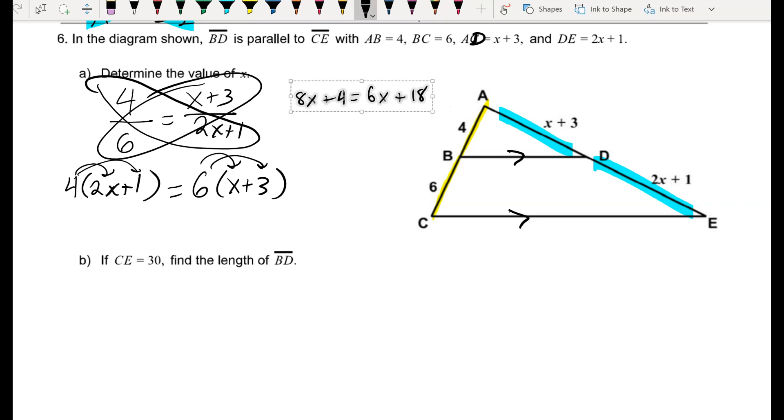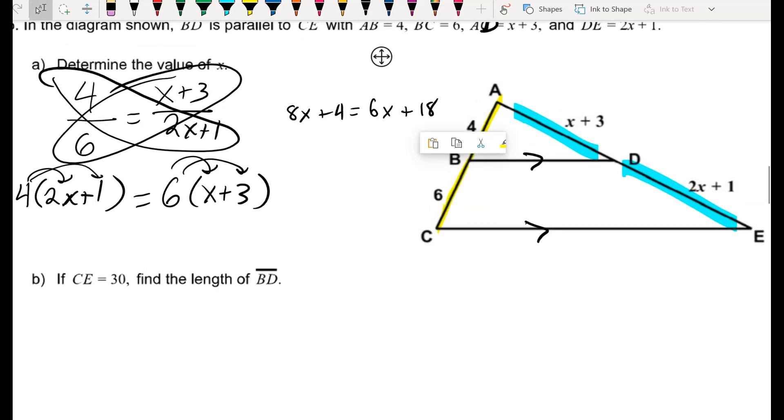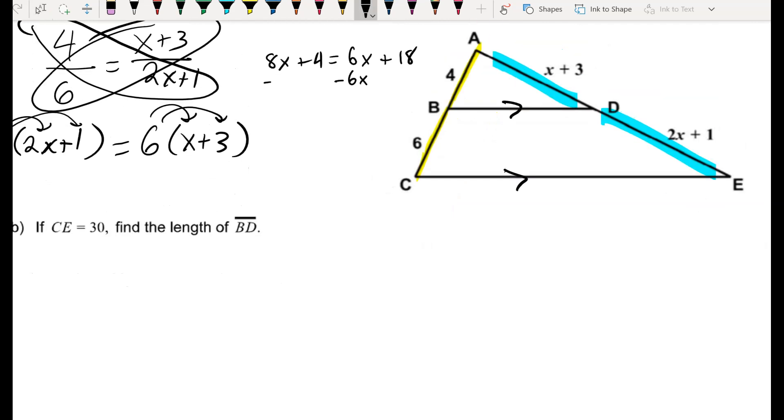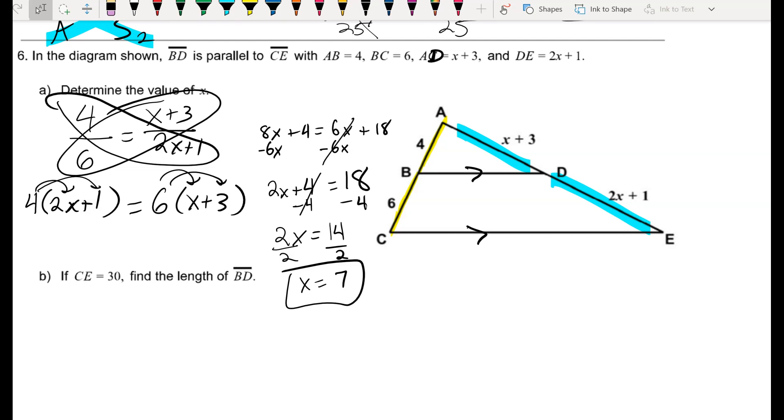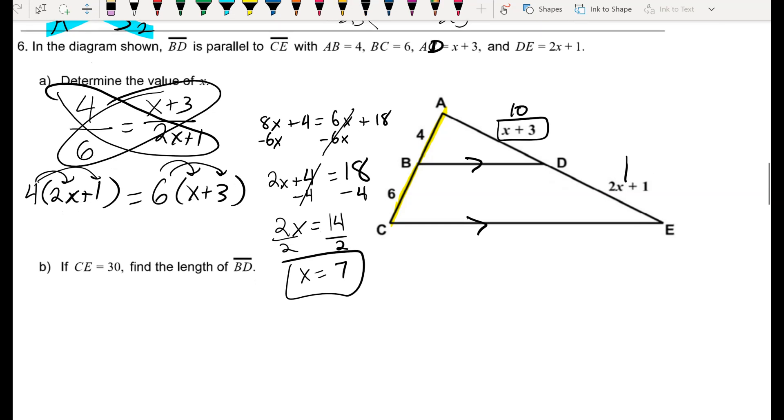I'll start by subtracting 6x on both sides to collect all my x terms together. 8x minus 6x is 2x. So if I subtract my constant, I can see that 2x is equal to 14. And if I divide out the two, I see that x is equal to 7. So I'm going to substitute back in. Rather than AD being x plus 3, I'll label AD as 10, just 7 plus 3. And if I make a quick substitution, 2 times 7 plus 1 is 15.